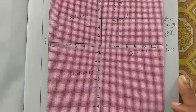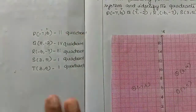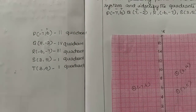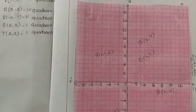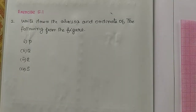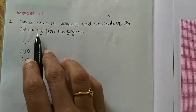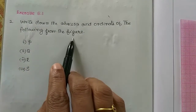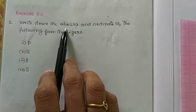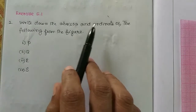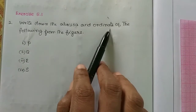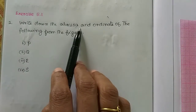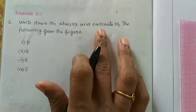Okay, so all the points are plotted. Students, in the next part of the video we will see exercise y.1 in the second section: write down the abscissa and ordinate of the following from the figure. Abscissa and ordinate are nothing but x-coordinate and y-coordinate — x-coordinate is abscissa and y-coordinate is ordinate.